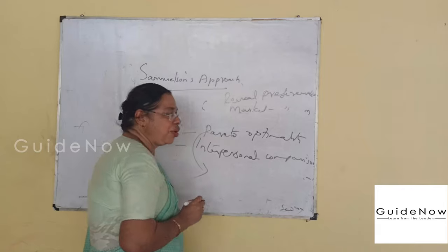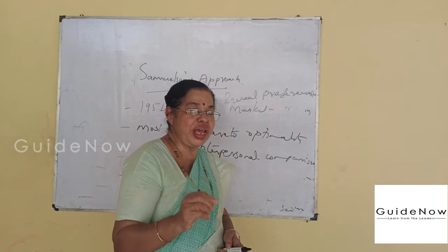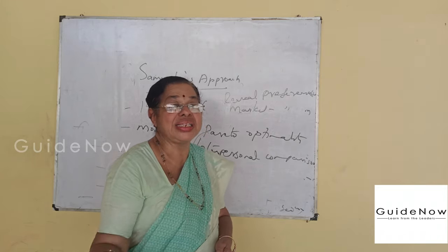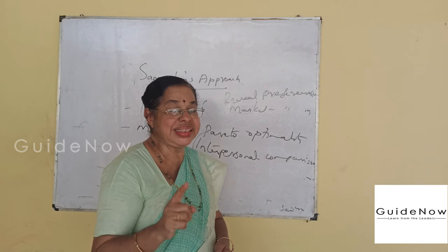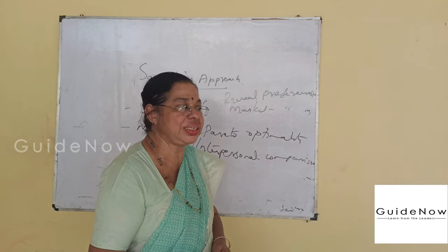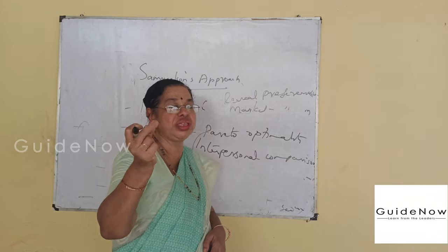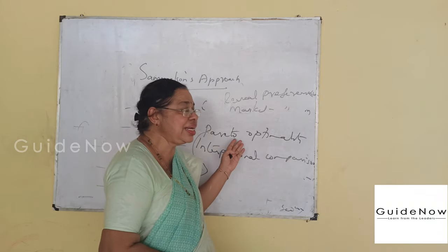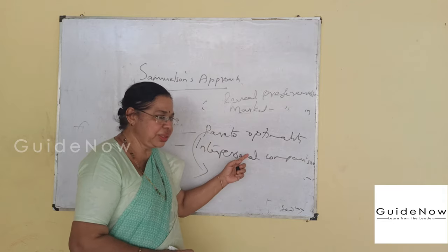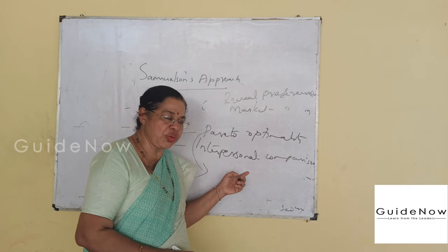Pareto-optimality means increasing the welfare of one individual without worsening the welfare of other individuals — one better off without worsening the others. This is the first important concept explained by Professor Paul Samuelson.